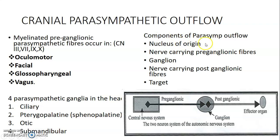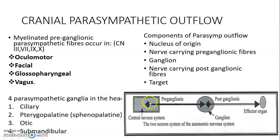The parasympathetic outflow contains the nuclear origins of these four cranial nerves. From the nuclei, preganglionic fibers carry information to one of the four specific ganglia — ciliary, pterygopalatine, otic, or submandibular. From the ganglion, postganglionic fibers carry information to the target effector organ, which could be a gland or a smooth muscle.